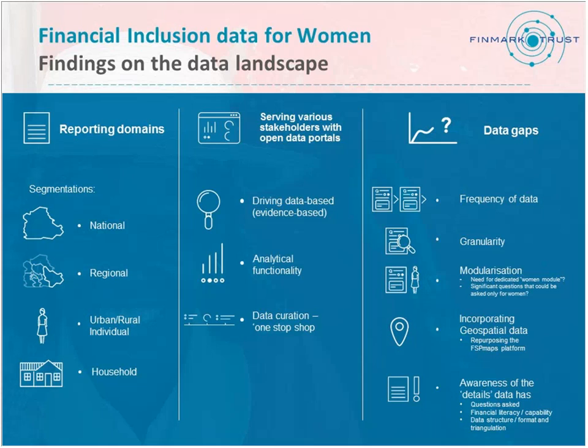We also try to provide analytical functionality. One of the things we have done is create something called an I2I web portal or data portal where all FinScope data will be housed, with analytical functionality. People will be able to start disaggregating data on gender, rural-urban split, regional level, age, and all those things. It helps create that functionality on segmentation.